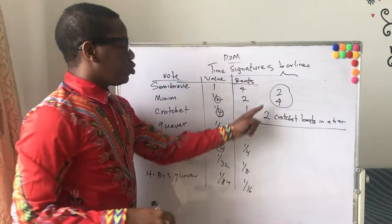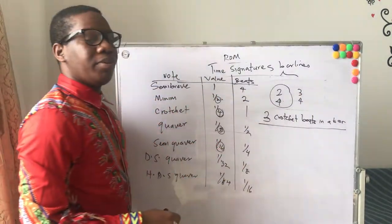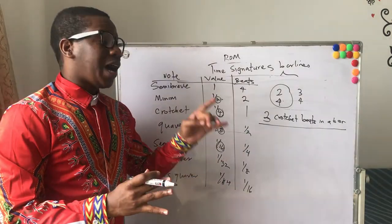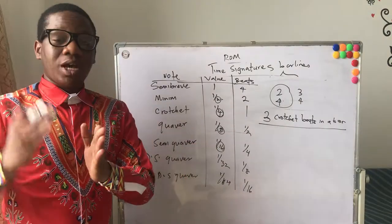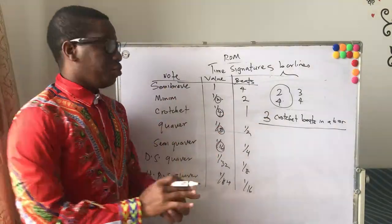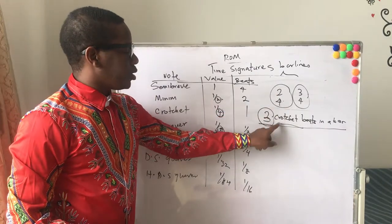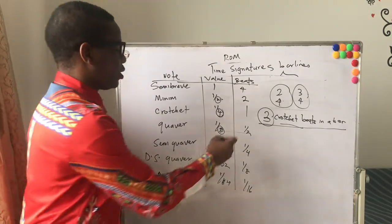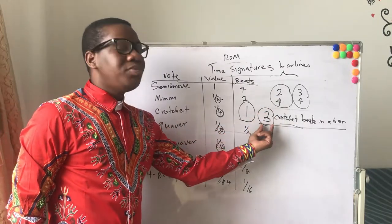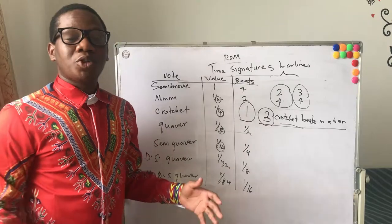Two crotchet beats in a bar — that's what two-four means. Three-four means three crotchet beats in a bar. It means that the whole stave is barred according to the time signature such that in a single bar you cannot have more than three crotchet beats. If the time signature is two-four, you cannot have more than two crotchet beats in the bar.